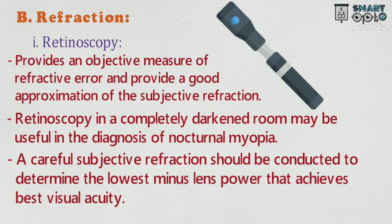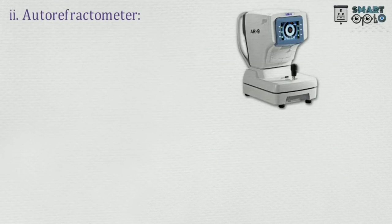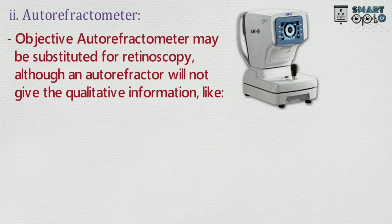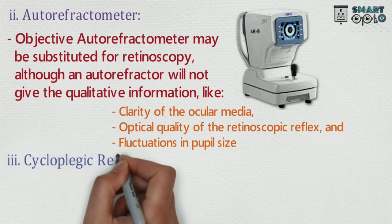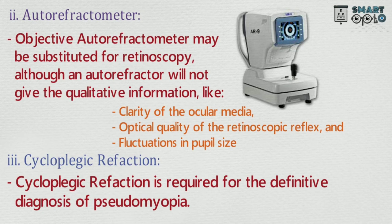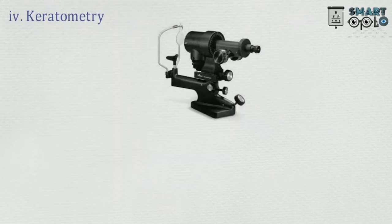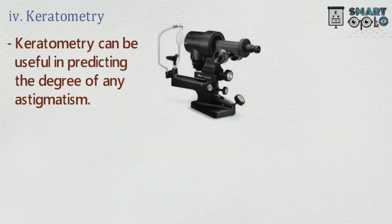A careful subjective refraction should be conducted to determine the lowest minus lens power that achieves best visual acuity. 2. Autorefractometer: objective autorefractometer may substitute for retinoscopy, although it will not give qualitative information like clarity of ocular media, optical quality of the retinoscopic reflex, and fluctuation in pupil size. 3. Cycloplegic refraction is required for definitive diagnosis of pseudomyopia. 4. Keratometry can be useful in predicting the degree of any astigmatism.